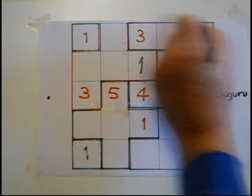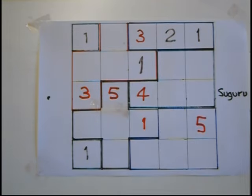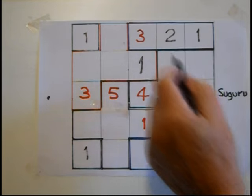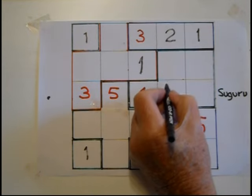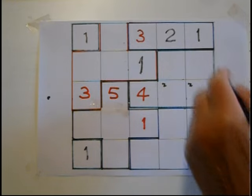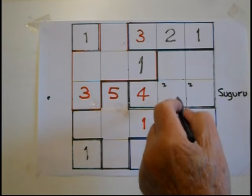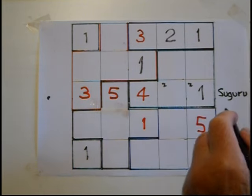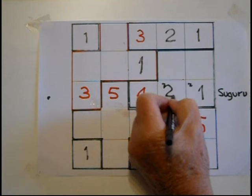So that makes that square a 1, as it's a block of 3 containing 1, 2, 3. Two can't be here or here so 2 can be there. One can't be there and there, one can't be there — this is the only place for 1.